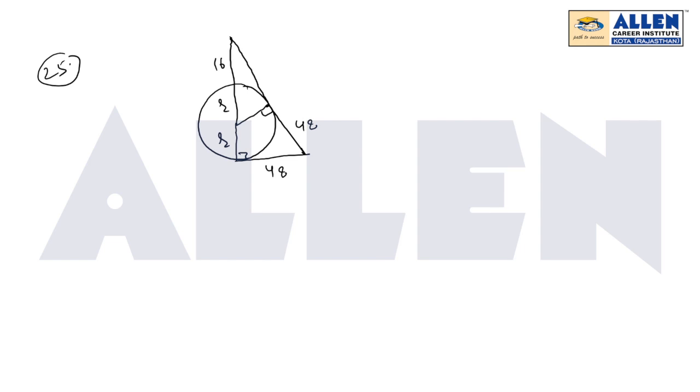So this must be R, R, R and this is also X. Now this angle is common for the two right angle triangles - this smaller one and this bigger one, and this angle and this angle will be equal.